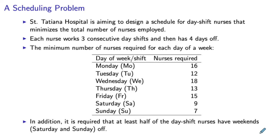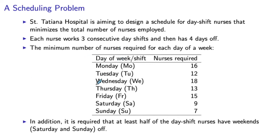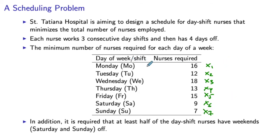As always, we start formulating a model by thinking about what would be the suitable decision variables. When you look at the data, perhaps the initial thought that comes to many is that we should define variables for the different days of the week — like x1 for Monday, x2 for Tuesday, and so on. So the i-th decision variable xi would be the number of nurses that work during the i-th day of the week, for i between 1 and 7.